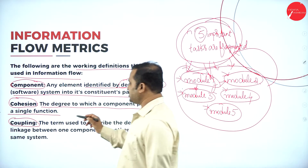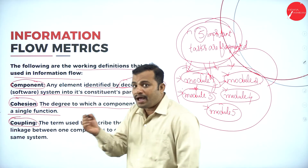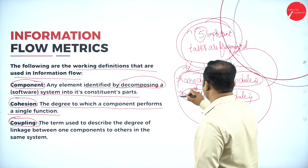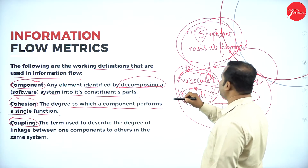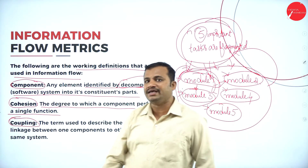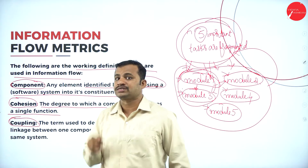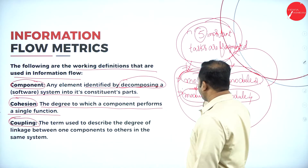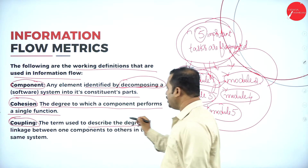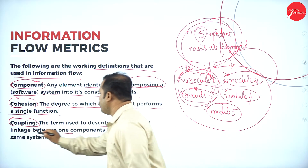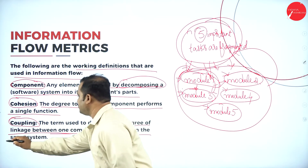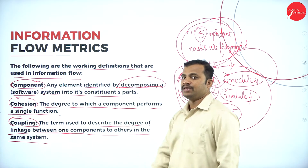Coupling means combining — integrating two modules together so they work completely as a single entity. It describes the degree to which the linkage between one component and others in the same system is present. That is called coupling.